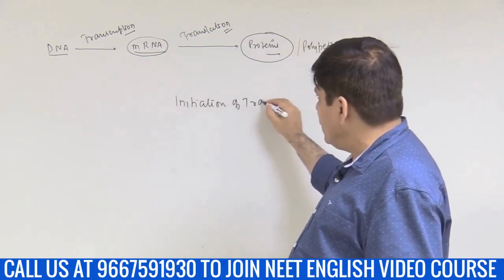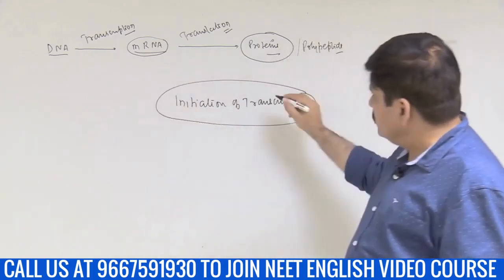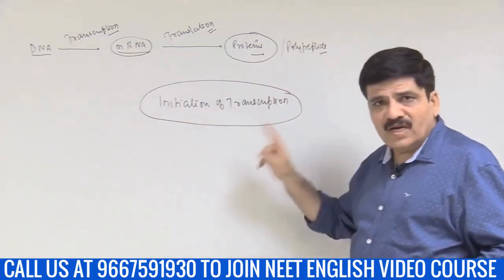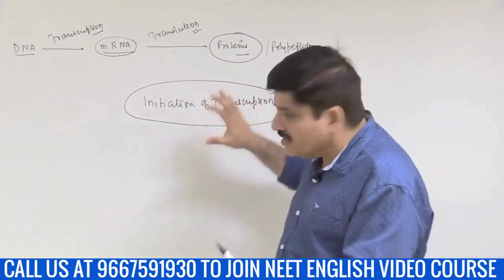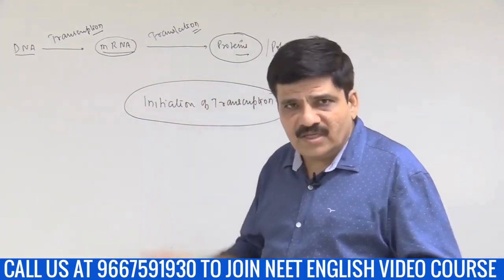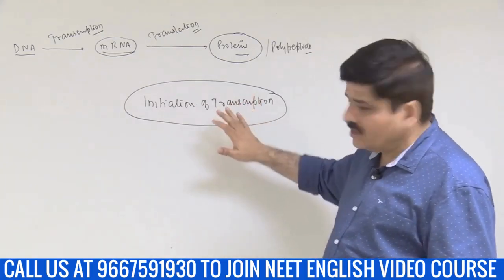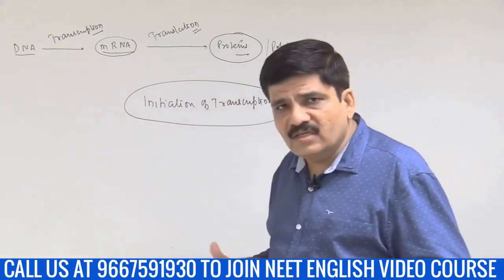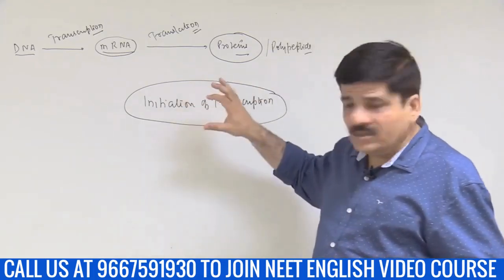I want to regulate gene expression — I do not want my gene to be expressed — so I should stop the initiation of transcription. In prokaryotes, this is the step where almost all gene expression is exclusively regulated. For a class 10–12 student, this is probably the exclusive method to regulate the level of gene expression in prokaryotic cells.